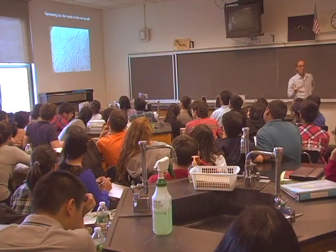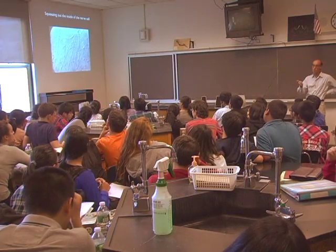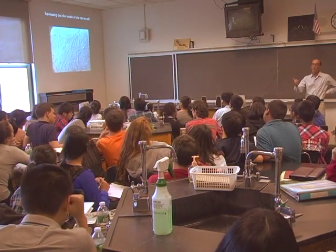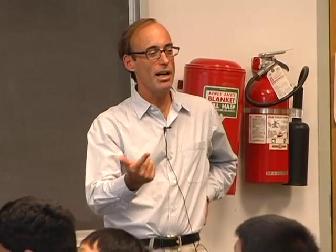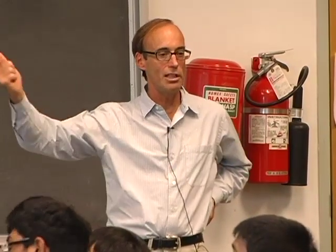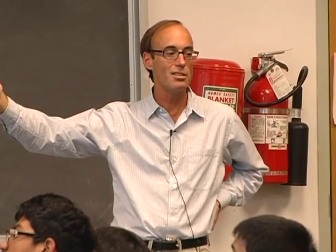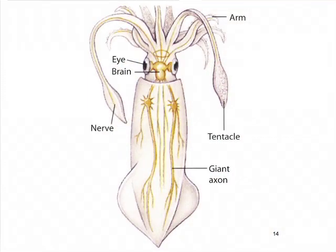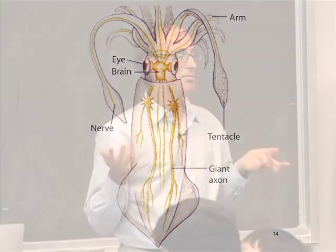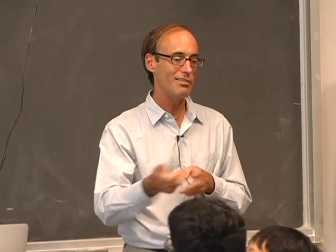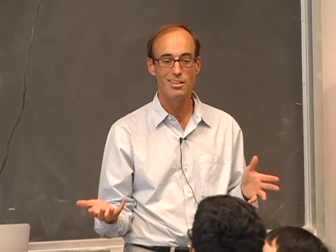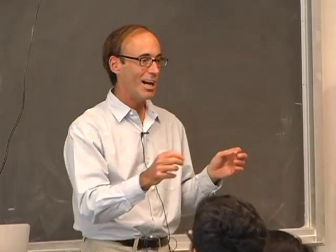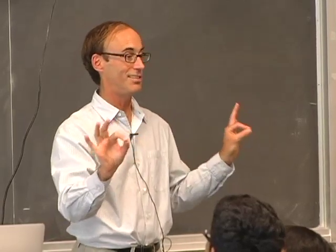Instead of studying this in people — most people don't want to donate their nerves — we used squid. The squid has an axon that's 50 to 100 times bigger than a human axon. You can easily dissect it out, and believe it or not, you can actually squeeze out the inside of the axon of a squid just like toothpaste — and out comes a little line of the inside of a cell.